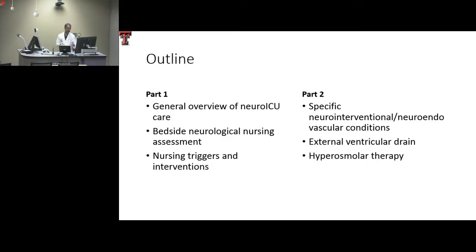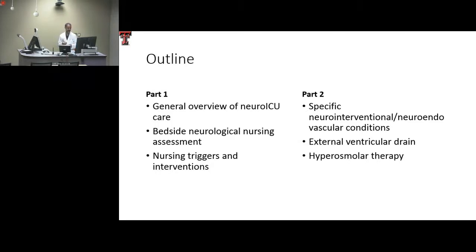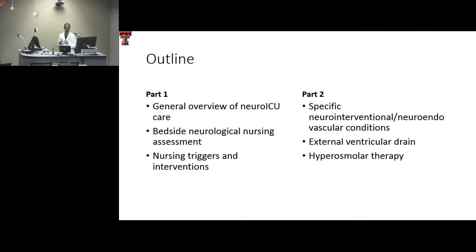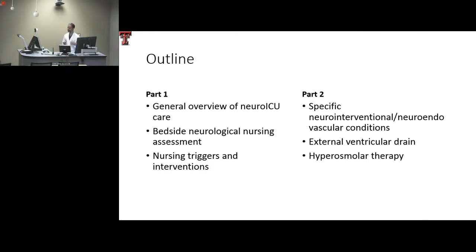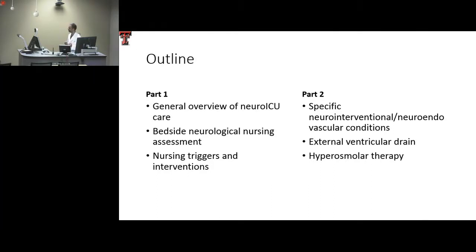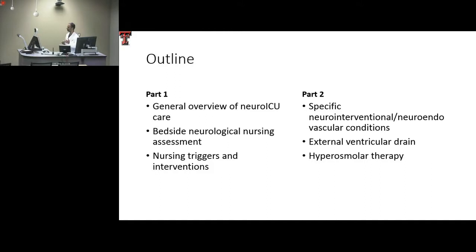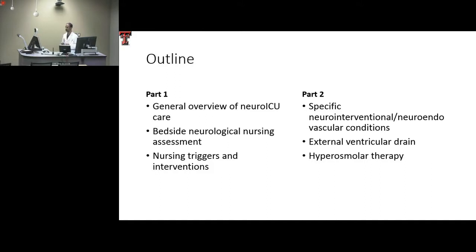The first part is the general overview, where we'll focus on nursing assessment and triggers. Then we'll talk about specific interventions and conditions, and lastly about ventriculostomy and osmolar therapy. There's overlap between these topics as we move forward.